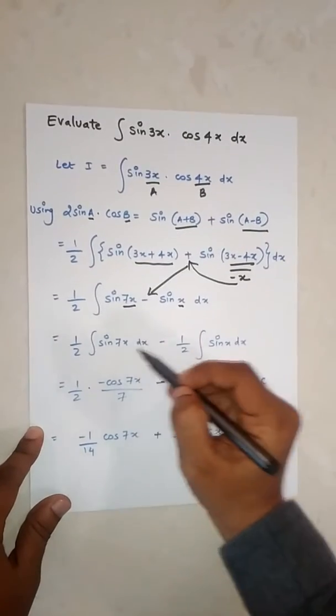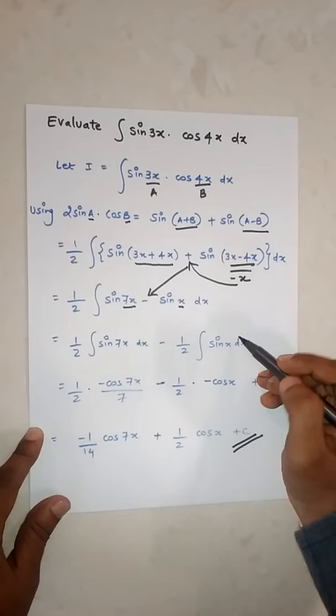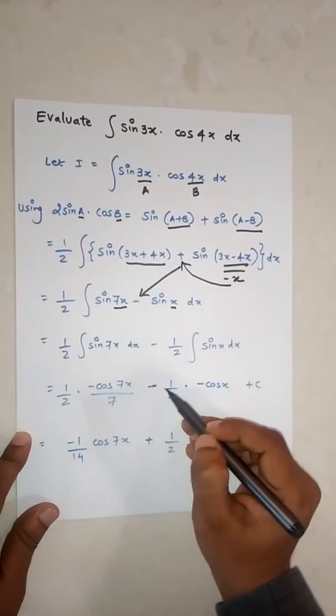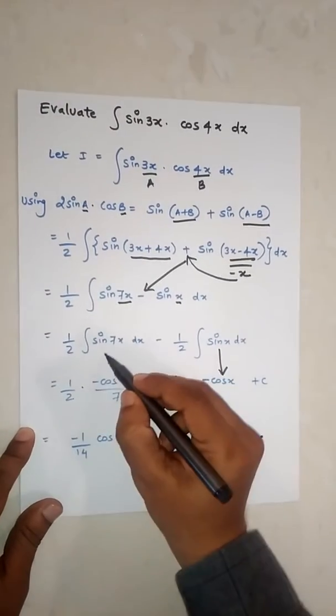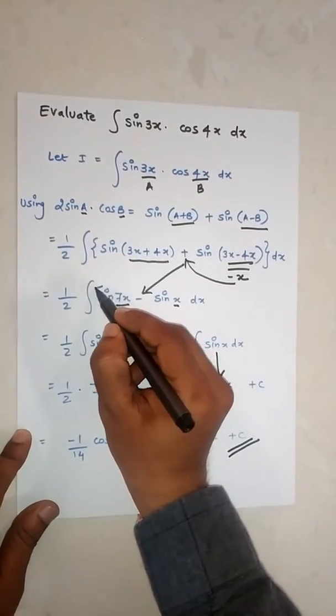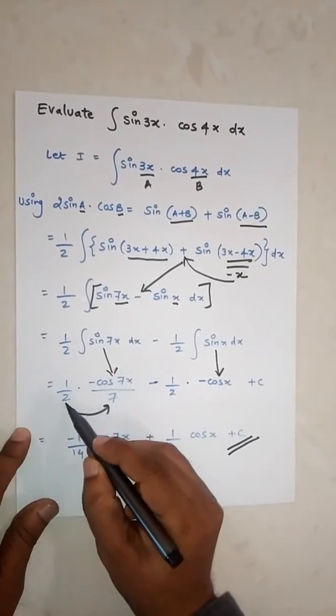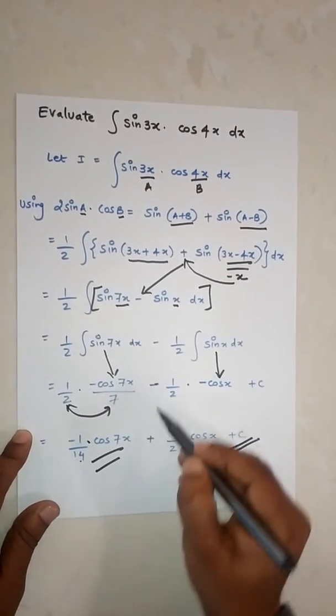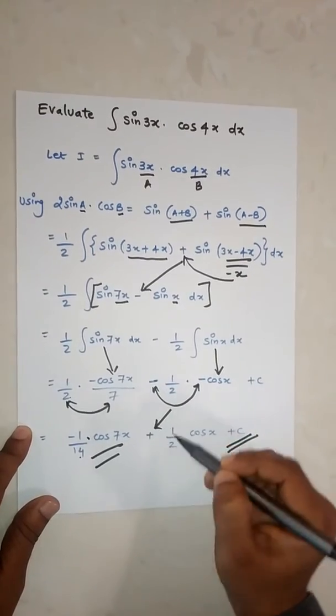Half into minus cos(7x) upon 7, minus half into minus cos(x) plus C. Integration of sin(7x) at the end: 7 times 2 is 14, so minus 1 upon 14 cos(7x). This minus and this minus is plus, so plus half cos(x) plus C.